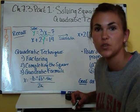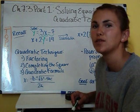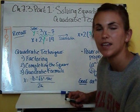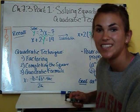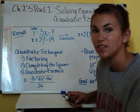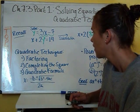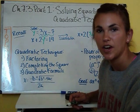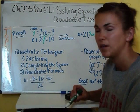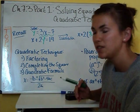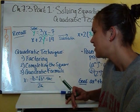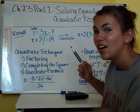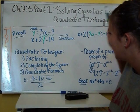We also have completing the square — that's where our C equals B divided by 2, squared. And then we also have the quadratic formula, which is negative B plus or minus the square root of B squared minus 4AC, all over 2A.